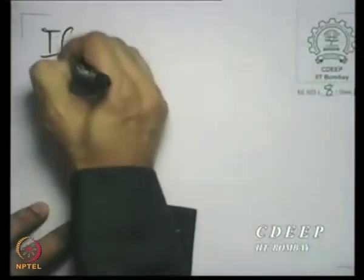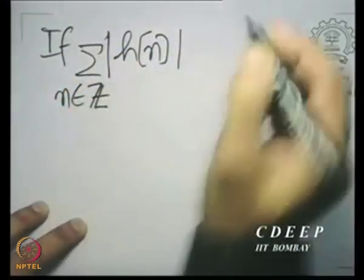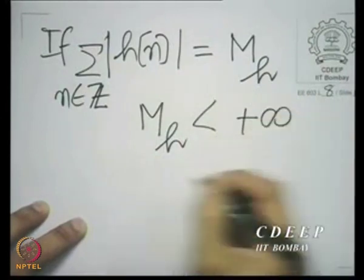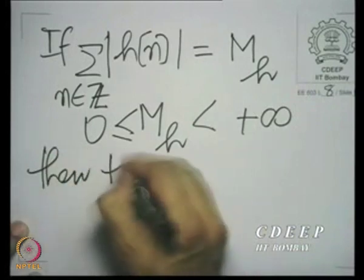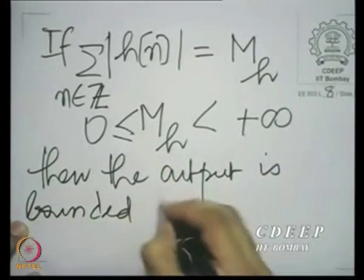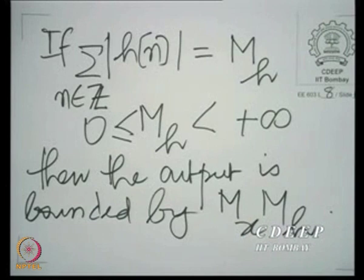Given that the input is bounded, the output is also bounded. If the sum of |h[n]| over all integer n equals M_h, and M_h is less than plus infinity and is non-negative, then not only is the output bounded, we know a bound on the output: it is bounded by M_x times M_h. This is a constructive conclusion, not just an existential one.